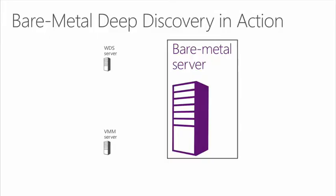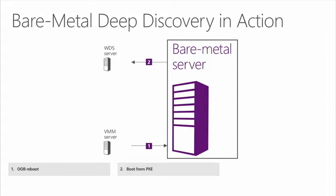If we go to this next slide, I have this bare-metal server, I've plugged it into my network, I've hooked up the out-of-band management — whether it's HP iLO, Dell DRAC, or whatever system I have — and I turn it on. VMM server goes and talks to the out-of-band management server and tells that server to reboot. When the server boots up, it does a PXE boot, talks to the WDS server. The WDS server then authorizes that server against VMM. VMM says yes, that's the right server — boot it up.